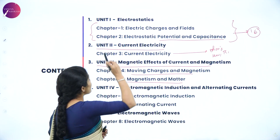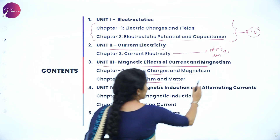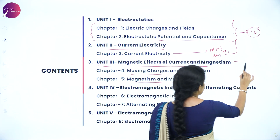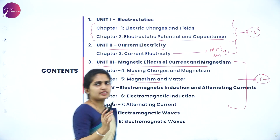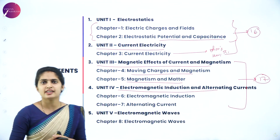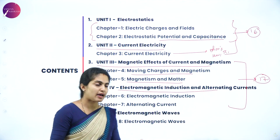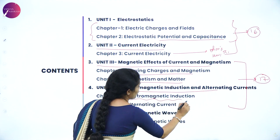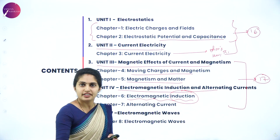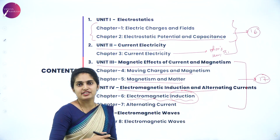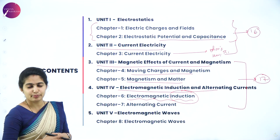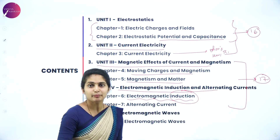Units one and two together are allotted 16 marks, while units three and four together consist of 17 marks. Unit four is Electromagnetic Induction and Alternating Currents, dealing with the fusion of electric and magnetic fields. Chapter 6 covers Electromagnetic Induction — due to magnetic field, current is induced; due to electric field, magnetic field is induced. There is mutual interaction between the two fields. It is a beautiful and important chapter.